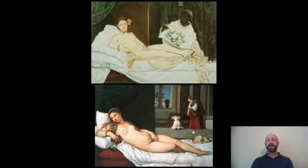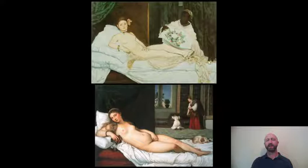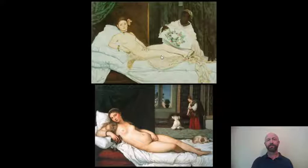In Venus of Urbino below, you see a little happy dog sleeping — a symbol of fidelity or loyalty. In Manet's Olympia above, you see a black cat that's arched its back and is hissing at you, as if to be an external manifestation of the psyche of the lying nude — saying she's not comfortable with this at all. You can keep going with that.